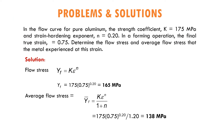To understand more about flow stress and average flow stress, let us look at a problem. The flow curve for pure aluminium has a strength coefficient k equal to 175 MPa and strain hardening exponent n equal to 0.2. In a forming operation, the final true strain is 0.75. For the flow stress, we take the equation: 175 MPa times 0.75 to the power of 0.2, which gives 165 MPa.